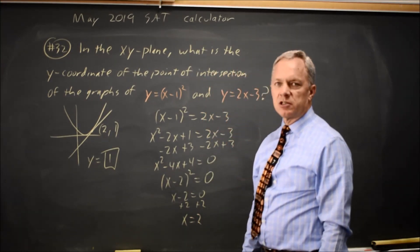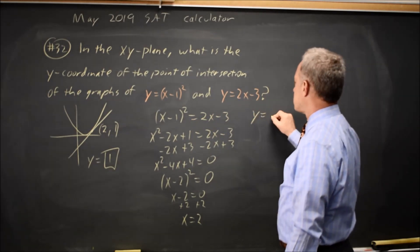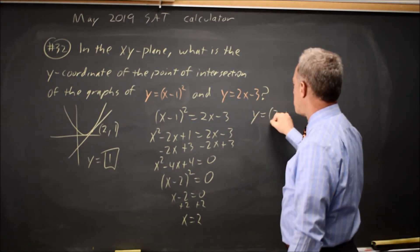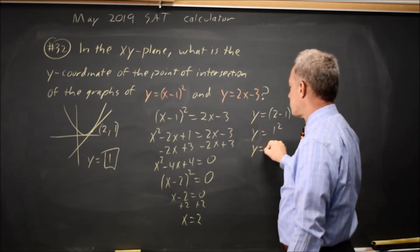So the point of intersection occurs at an x value of 2, and y equals x minus 1 is 2 minus 1, quantity squared, so y equals 1 squared, y equals 1.